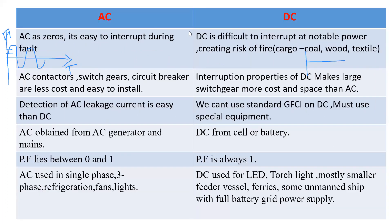AC has zero crossings in its sine wave, which makes it easy to interrupt during a fault. AC contactors, switch gears, and circuit breakers are easy to install, and quenching of fault current or short circuit current is easy in AC. At the zero position, the circuit breaker quenches the fault current easily. The arcing compartment, made of porcelain material, quenches the arc at the zero potential by increasing the arc length.